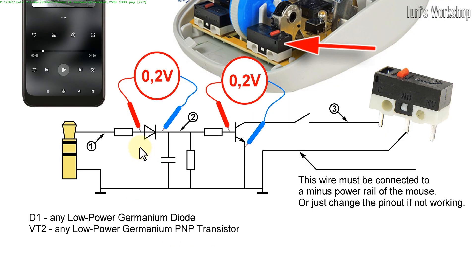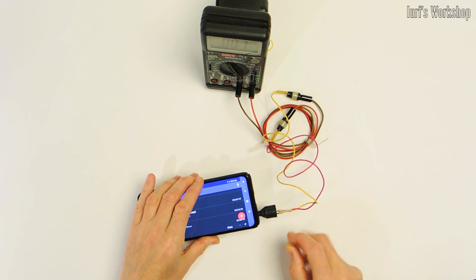In this circuit, I used germanium semiconductors, each with 0.2 volts dropping on them. This allowed the use of a low-level signal source.